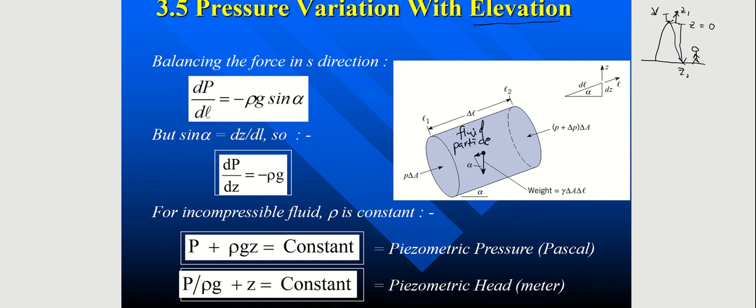So this fluid particle is slanted at a certain angle here, alpha. So this side should be lower. This should be higher. Let's say we take this as our datum, z equals to 0. So go up. Elevation increases.